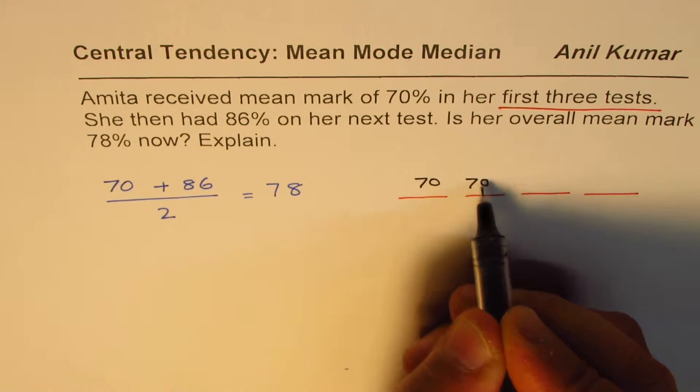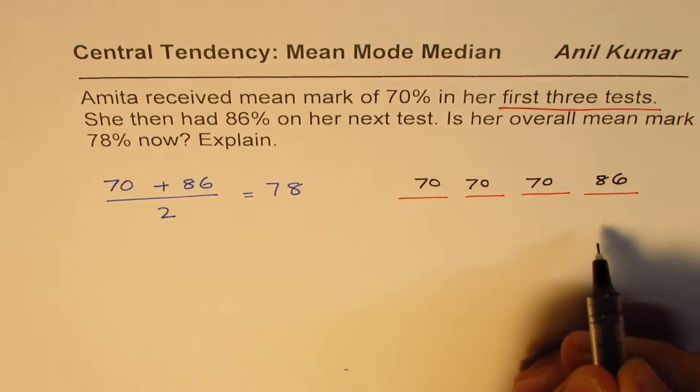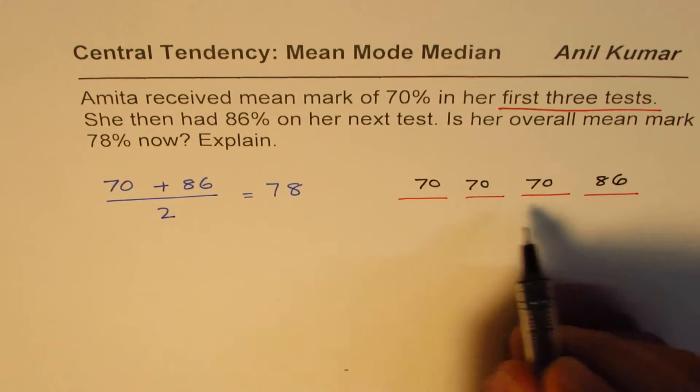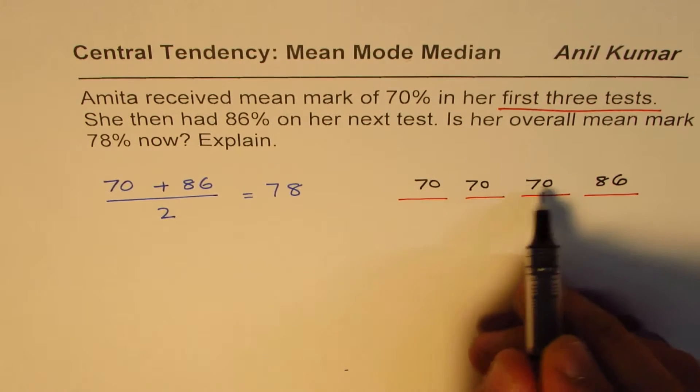That means we could take these as 70, 70, and 70, and the fourth one is 86, right? So in four tests, her marks on average will be kind of like this. I just written 70, 70, 70.